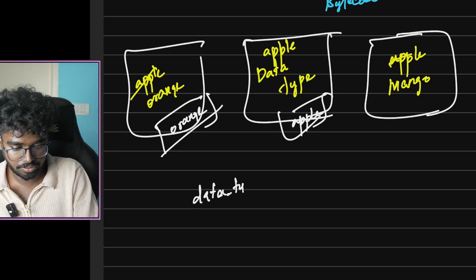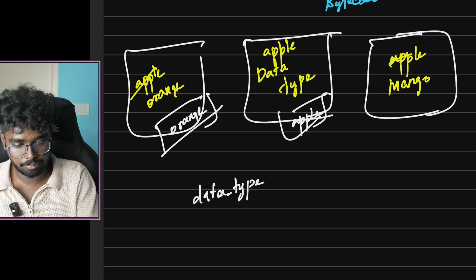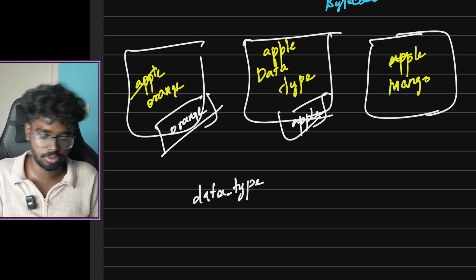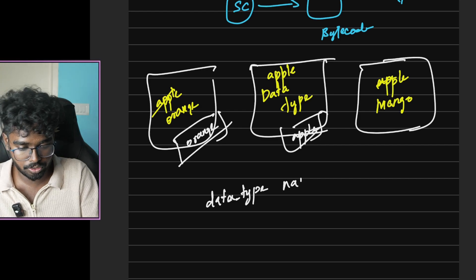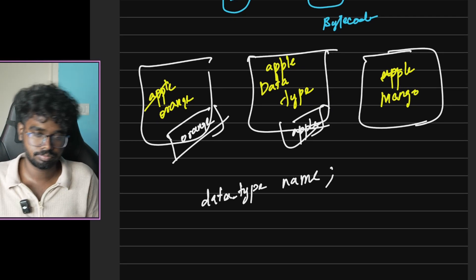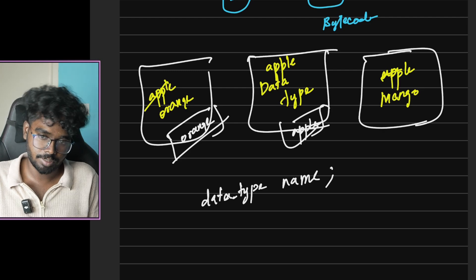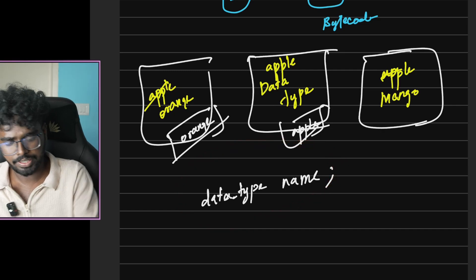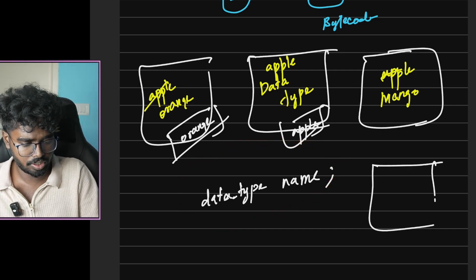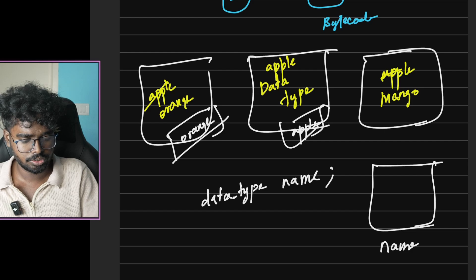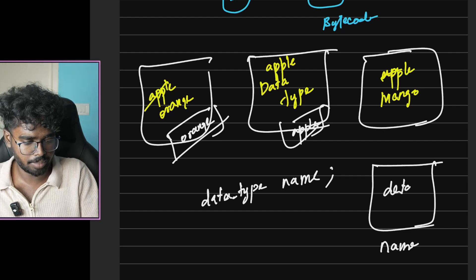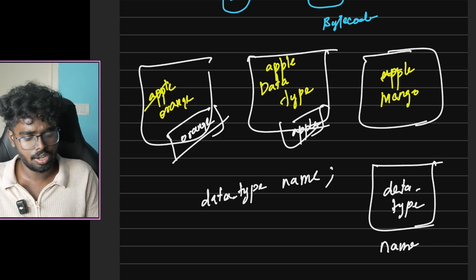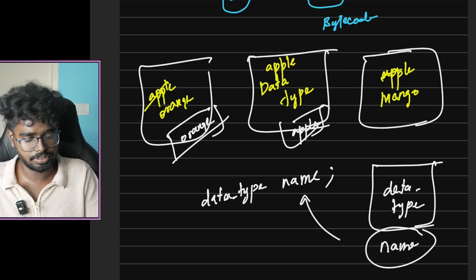Data type first, then variable name — orange, apple — then the name. Format: data type, variable name. This is how we take an example. When tested, the host will be connected to the name. This name next to the box — the value has been passed. This is how we know it's going to calculate anything — this number will contain a value depending on the variable name you give.